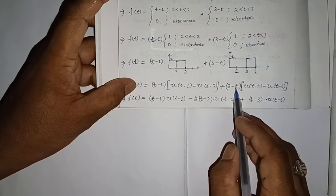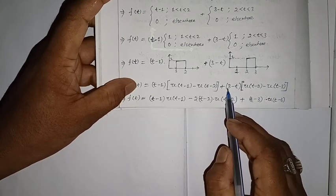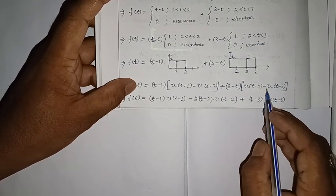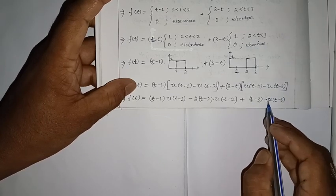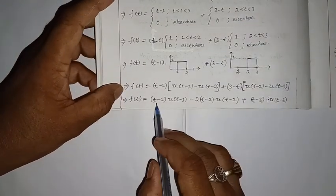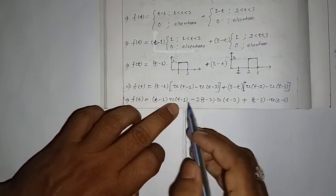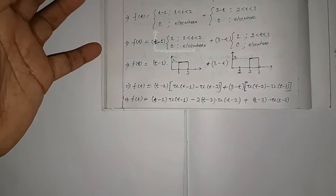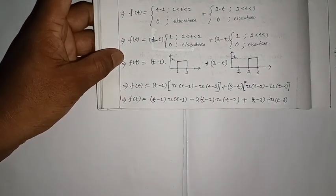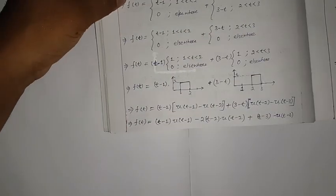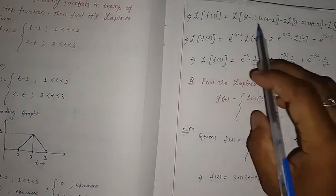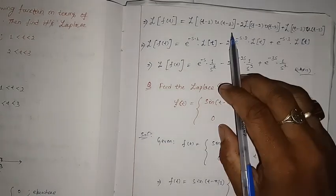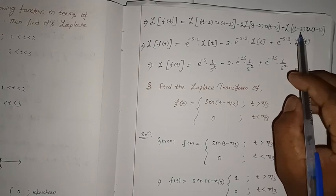Now we can apply the Second Shifting Theorem to each term. The Laplace transform of f(t) equals: Laplace transform of (t minus 1)u(t minus 1), minus 2 times Laplace transform of (t minus 2)u(t minus 2), plus Laplace transform of (t minus 3)u(t minus 3).